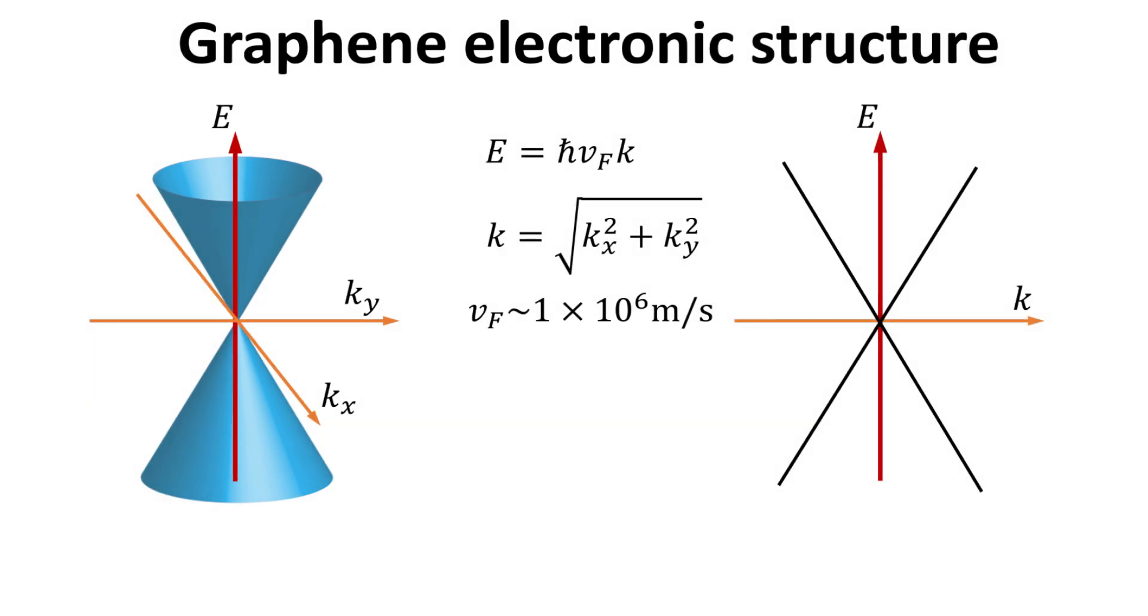The energy has a linear dispersion relation written as shown, where h-bar is the Planck constant, and vf is the electron Fermi velocity, which is about 300 times smaller than the speed of light in free space. We can simply plot the energy dispersion in terms of the magnitude of the electron wave vector as shown on the right.